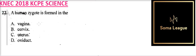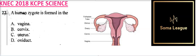Before we answer that, let's have a look at the human reproduction system. This is a female reproduction system. The sperm gets in through the vagina and goes to the uterus. The ovary produces the ovule, and the male gamete and the female gamete meet here. Fertilization takes place in the fallopian tube. Then the zygote gets into the uterus where it starts developing.